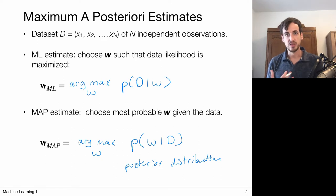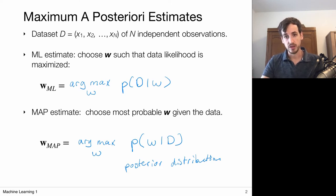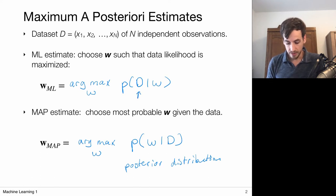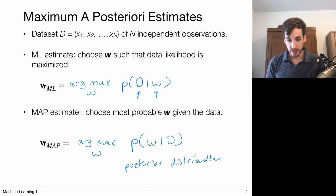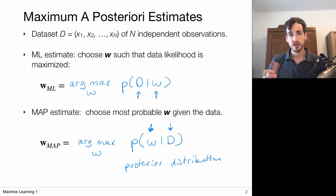The posterior distribution assigns probabilities to my model parameters given that I've observed my data. We are changing viewpoints: initially we considered distributions over data parameterized by weights w, where w was what we optimized over. Now we consider the probability as a distribution over the weights given my observed data points, and we can do this using Bayes theorem.